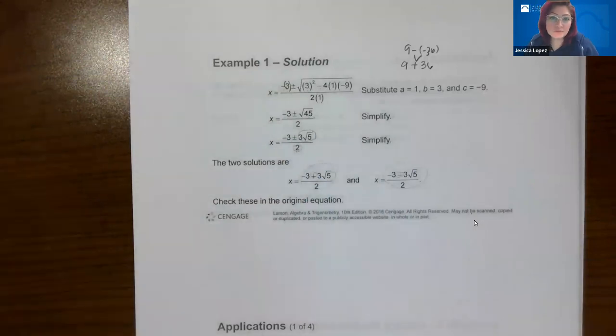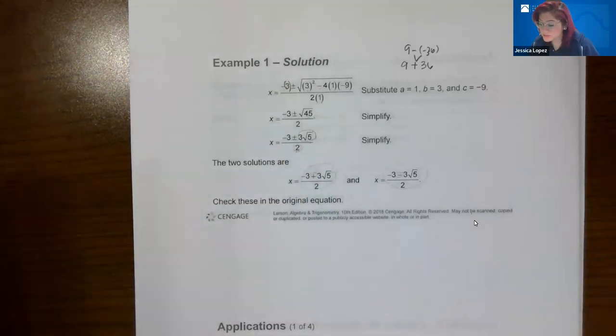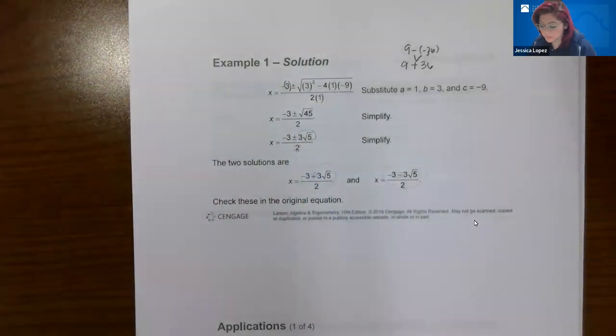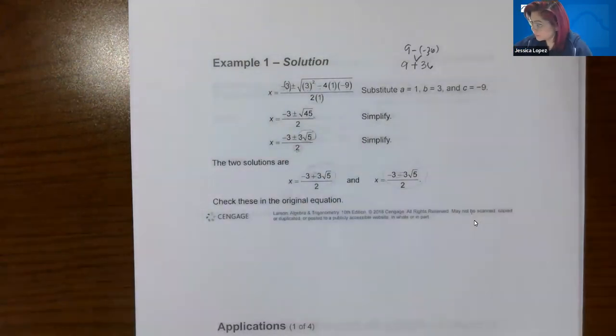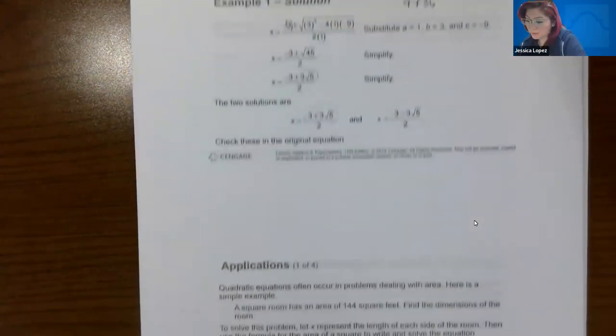The square root of 45 simplifies to 3√5. Since the numerator's coefficient 3 and the denominator 2 don't share a common factor, we can't simplify the fraction. So we write two separate fractions: (−3 + 3√5)/2 and (−3 − 3√5)/2. If WebAssign asks for a decimal representation, type those into your calculator to get the decimal values.